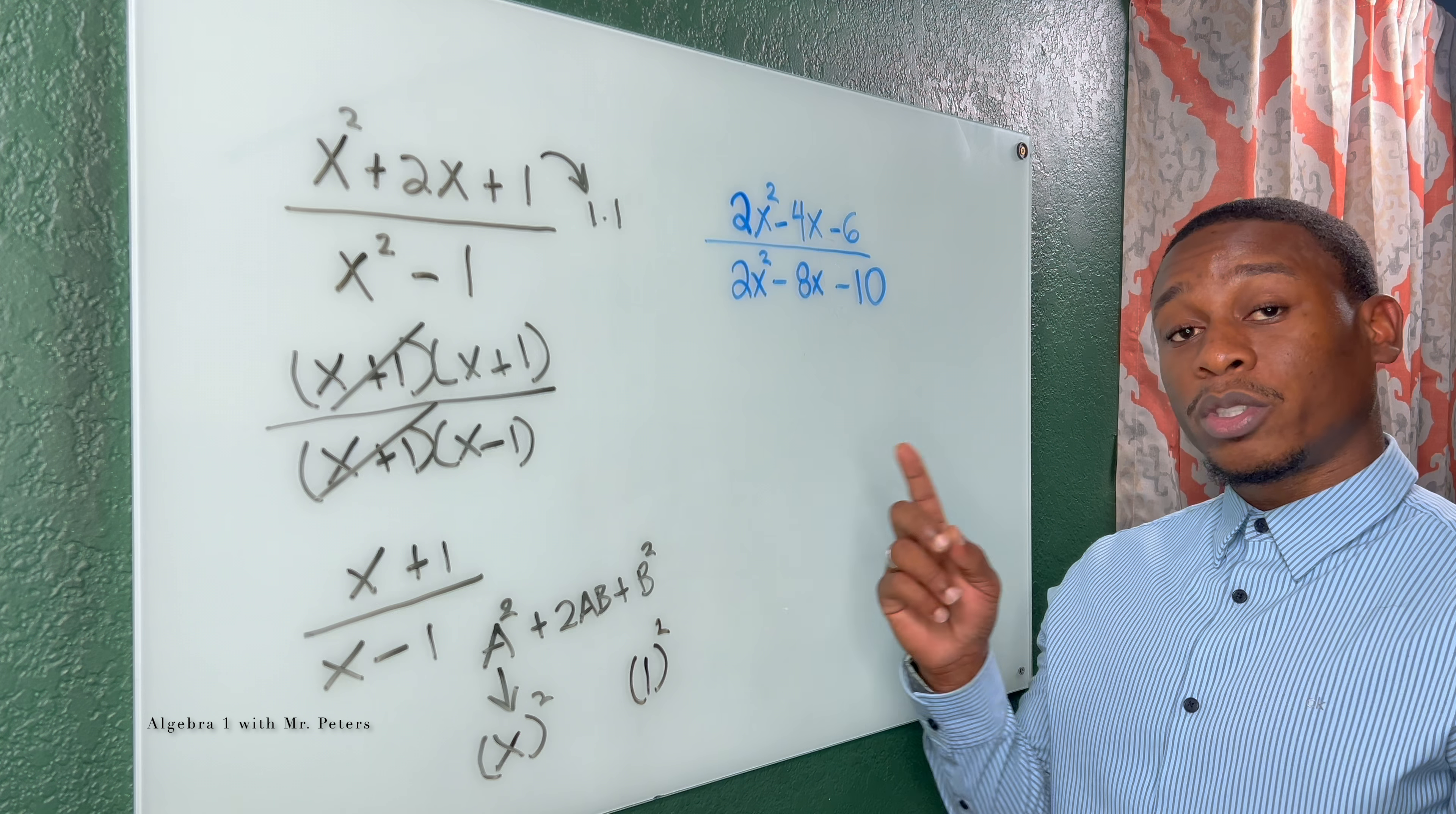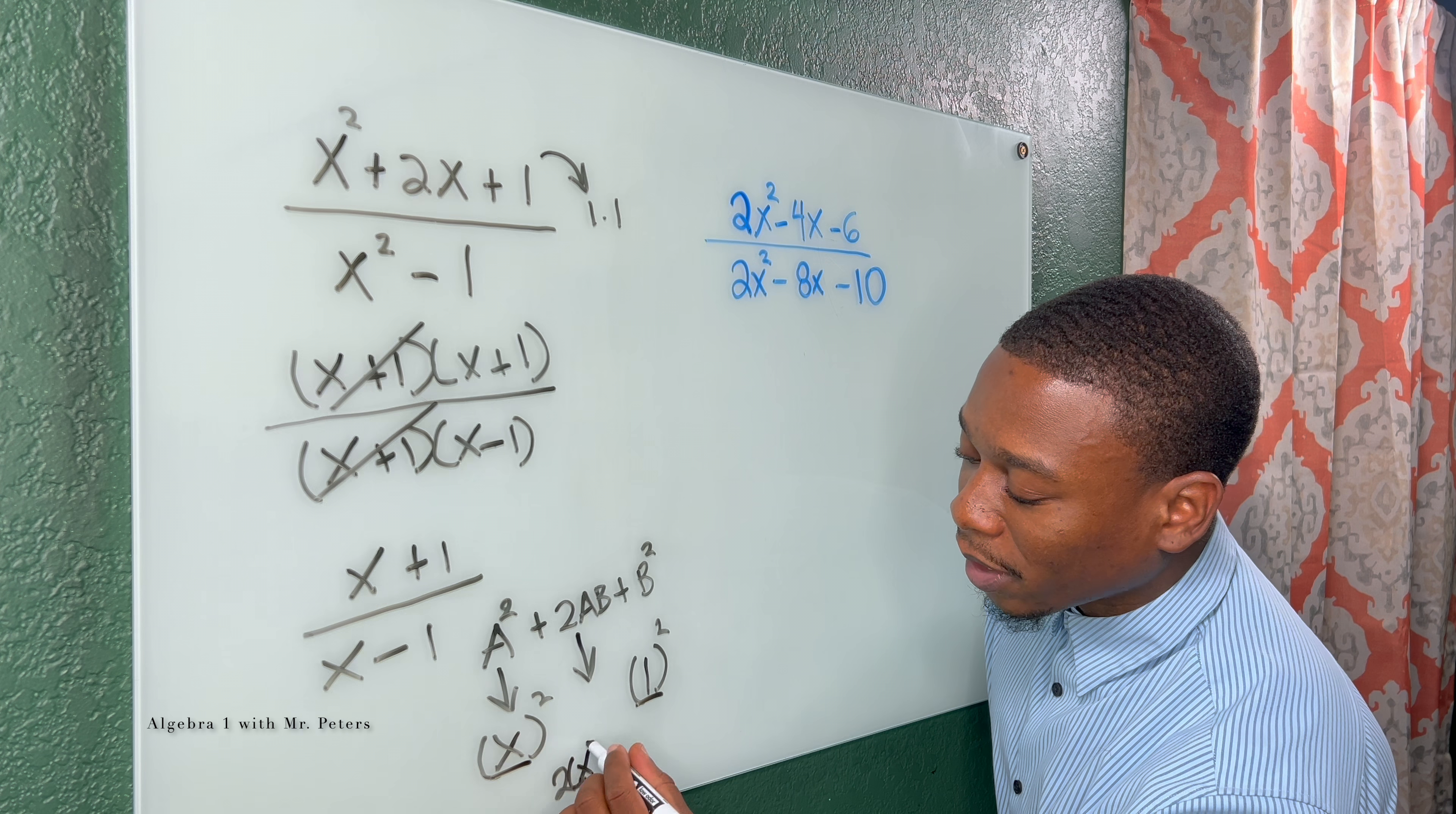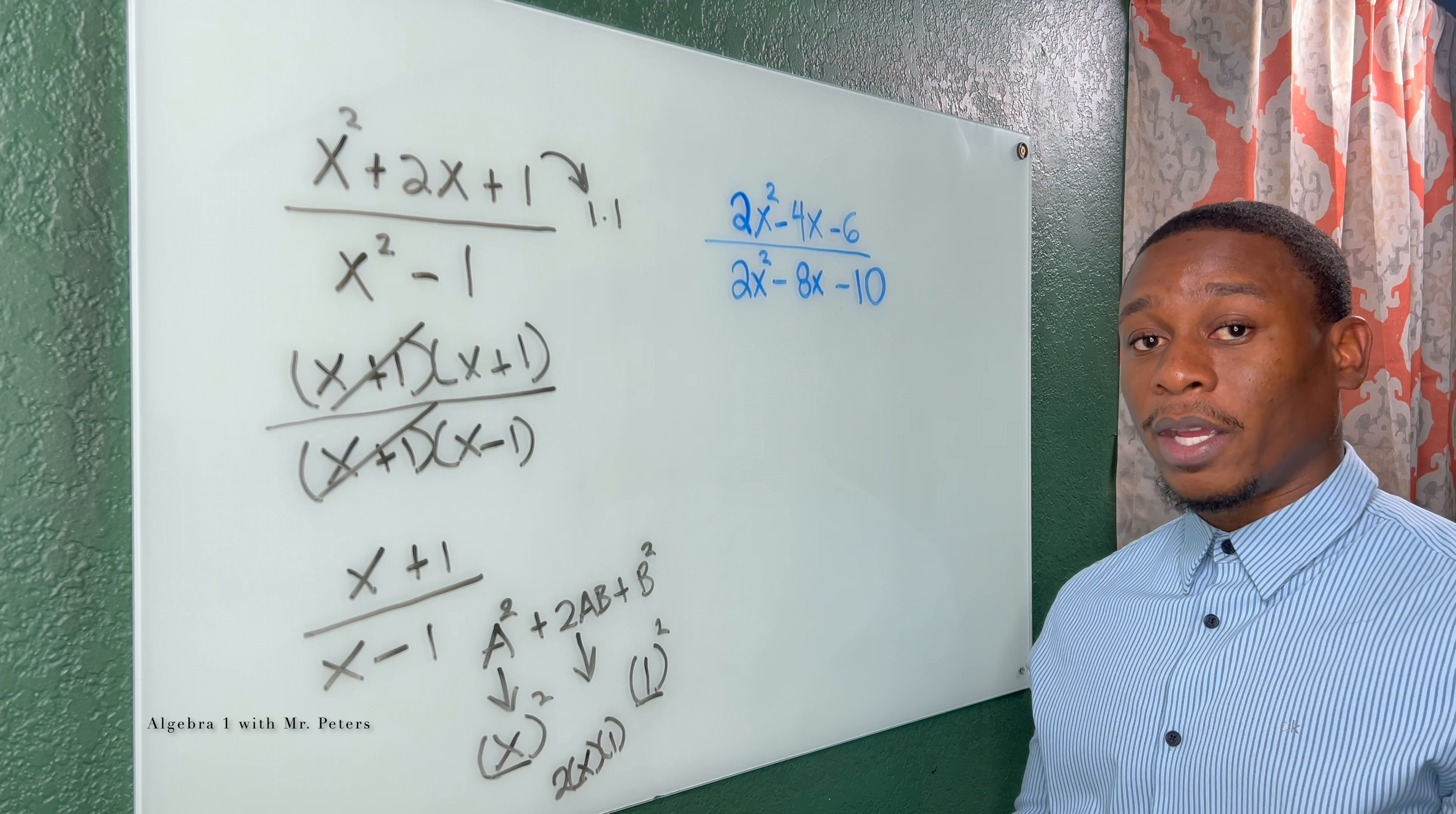And then when we look at the middle term, that's the telling part. The middle term is 2 times AB, which will be 2 times x times 1, which will give us that 2x. I'll link the perfect square trinomial video down below if you guys need help with identifying and factoring.